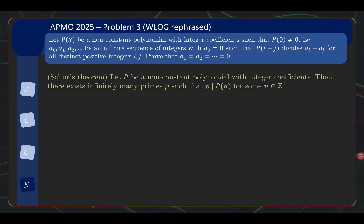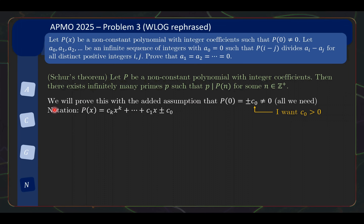Now, the proof of Schur's theorem itself is harder than the original problem, but there is a pretty elegant proof. We will only prove it with the added assumption that P(0) ≠ 0, since that's all we need; I'll leave the reduction from the general case as an exercise. Let c_0 = |P(0)|, so c_0 is positive, giving cleaner notation. The polynomial is written with coefficients c_i, and the constant term is ±c_0.